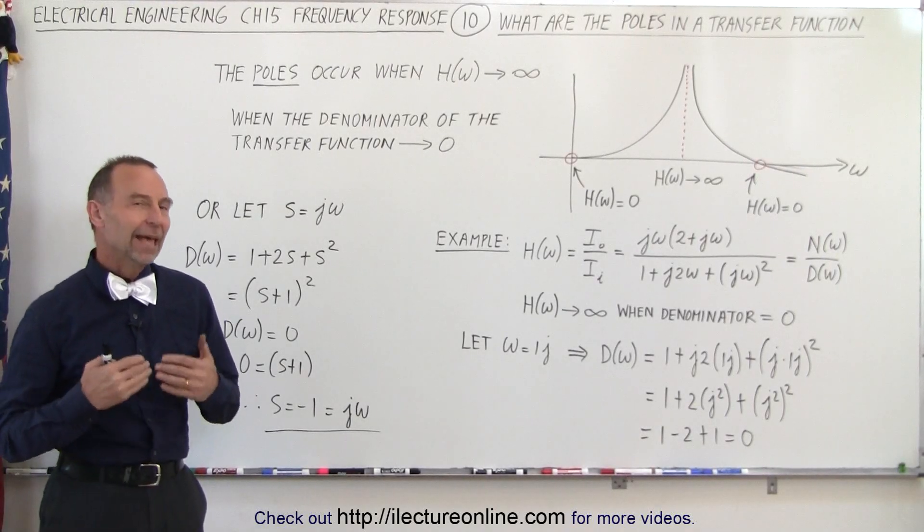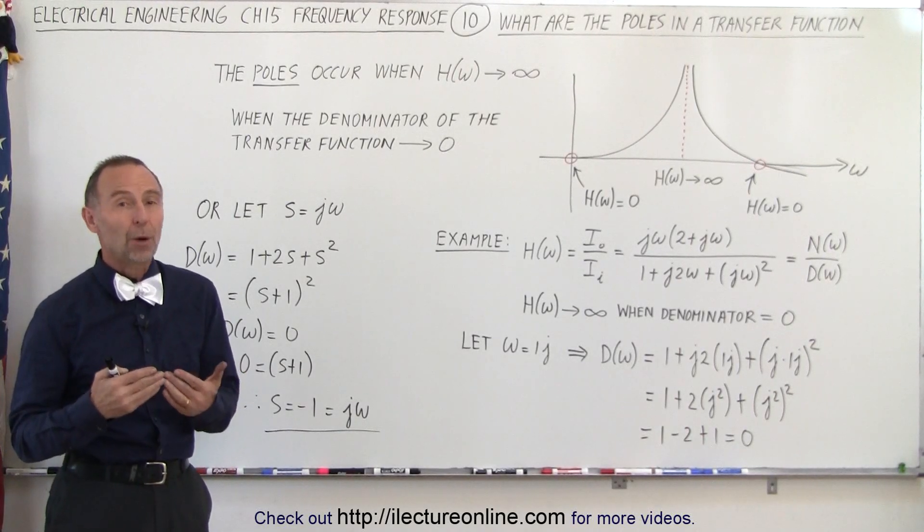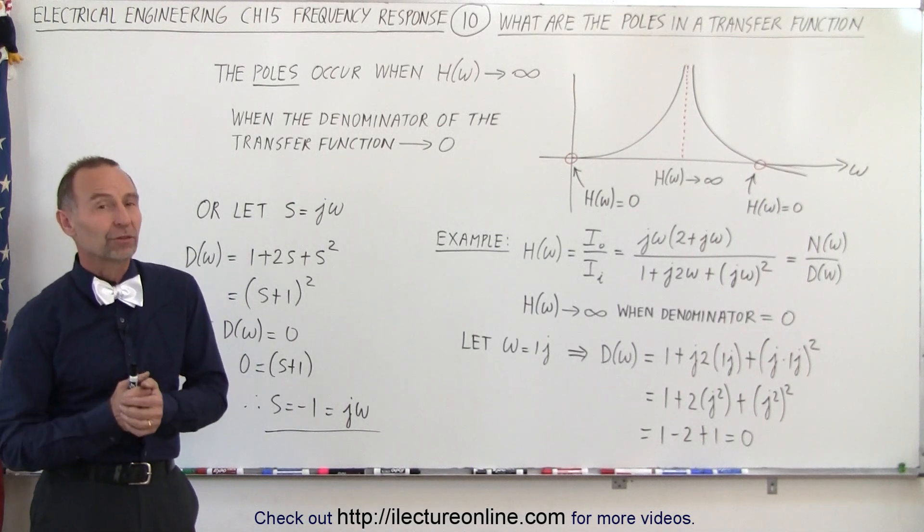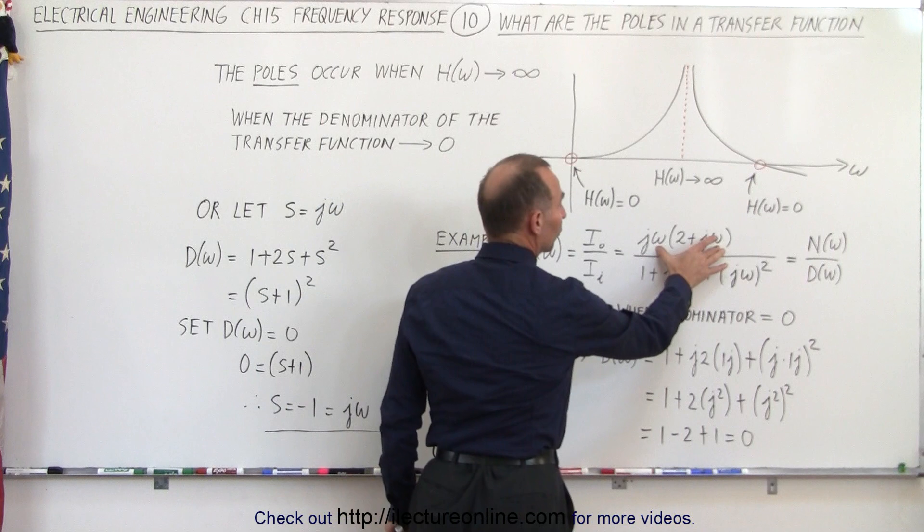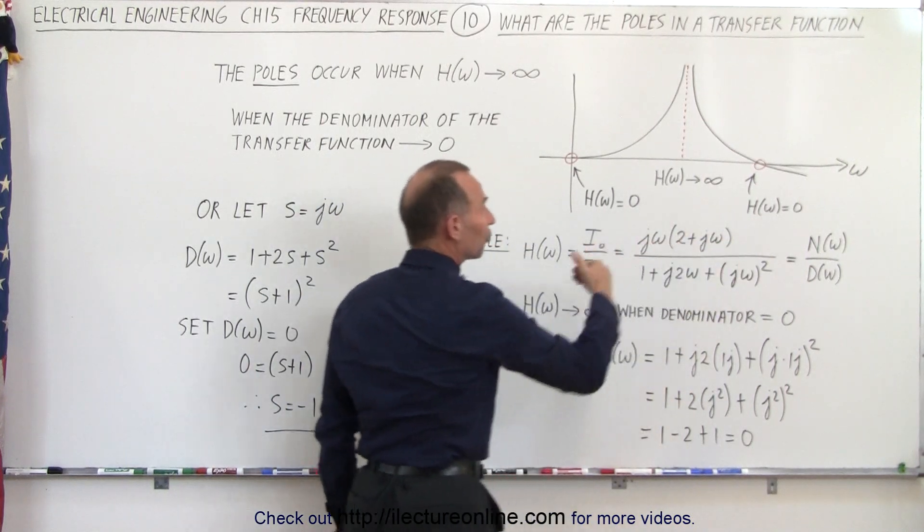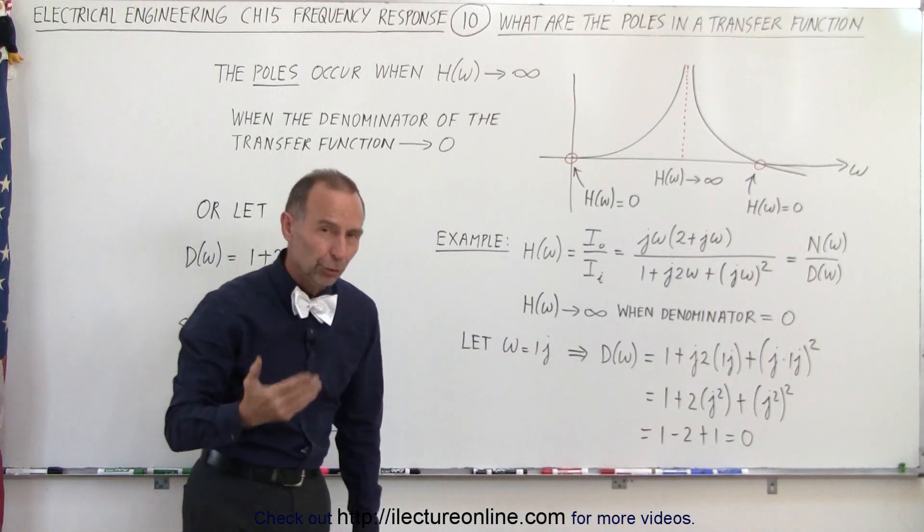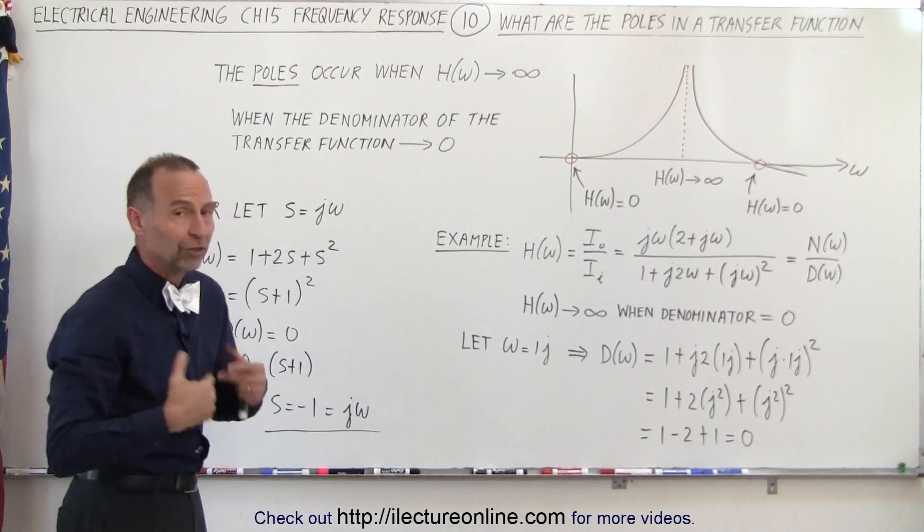Welcome to Electronline. In the last video we discovered how we identify zeros in a transfer function. That is when the numerator of the transfer function is equal to zero. So we look for all the values of omega or j omega that will make the numerator zero, and that's where the zeros are.